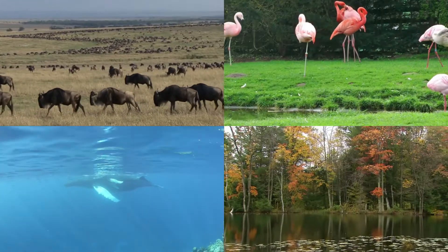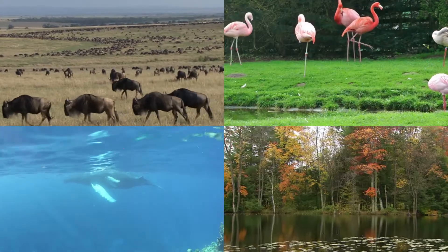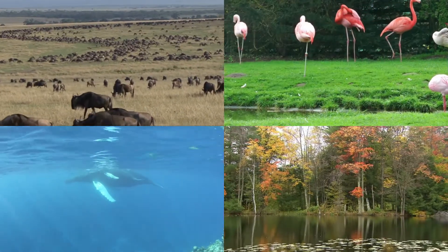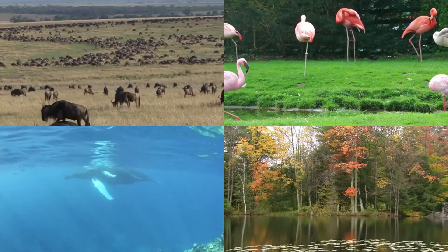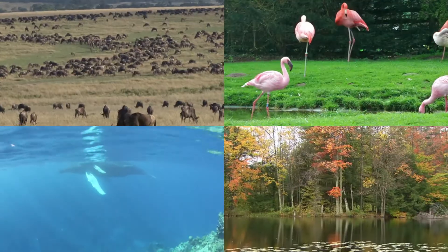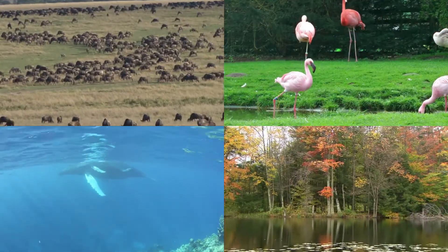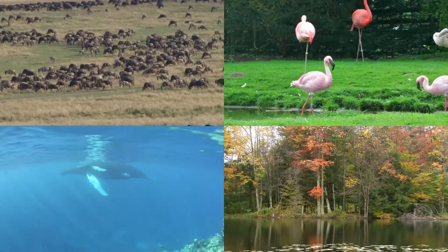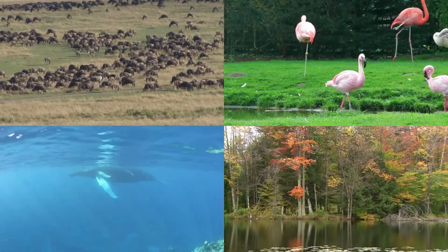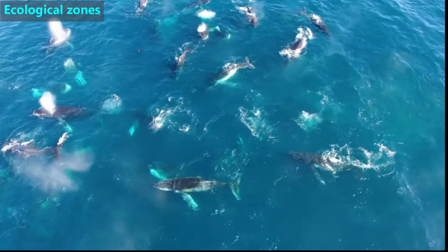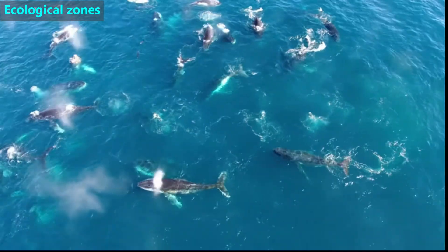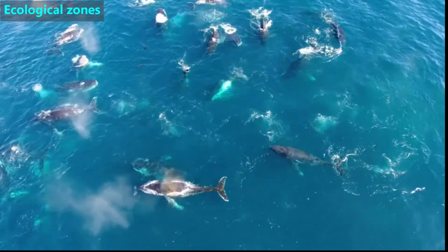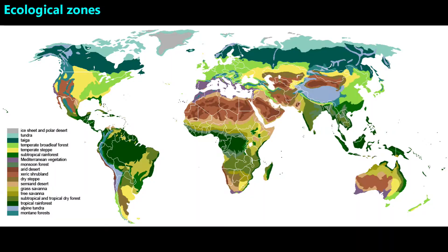Ecosystems can be on the land, in the water, or both, such as a pond and the land around it. Ecosystems can cover a small area or a huge area, and they can have a few species or many species. Ecologists divide the world into ecological zones, sometimes called biomes. These zones are made based on the temperature, terrain, and what organisms may live there.